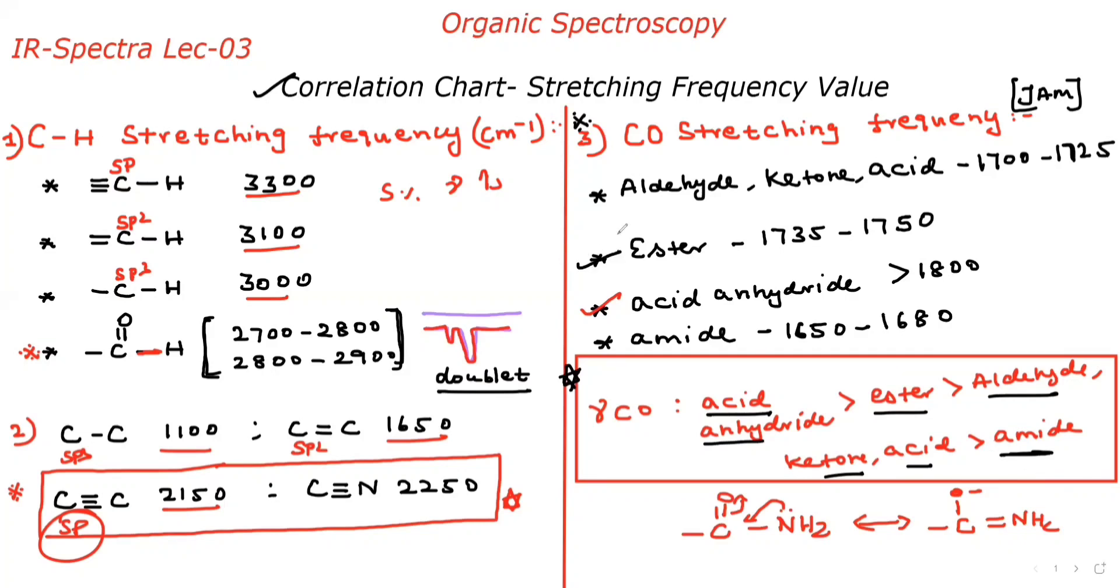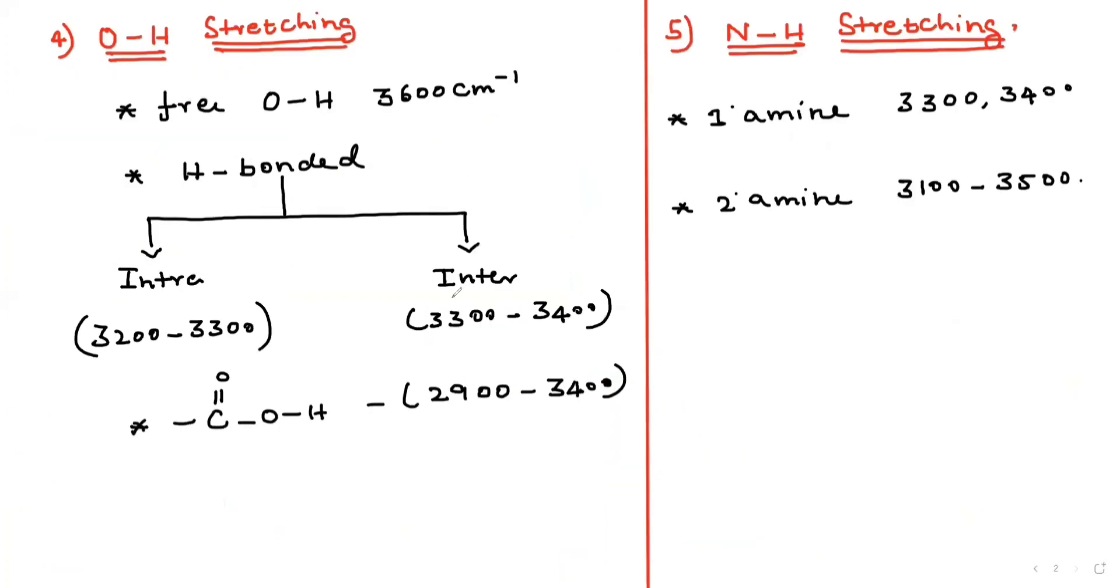Acetic anhydride, then ester, and aldehyde, ketone, acid. What is the lowest value? Amide is the lowest value. It's very important for our JAM exam point of view, please note. The ester value is also very important. Complete aldehyde, ketone, acid, ester, acetic anhydride, and amide is very important for our JAM exam point of view. Now let's go for very important O-H stretching frequency.